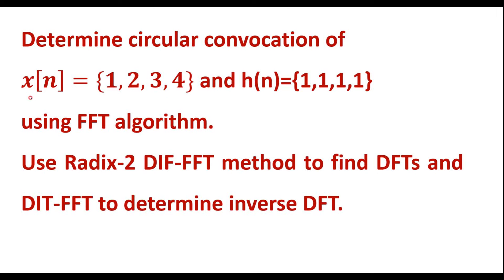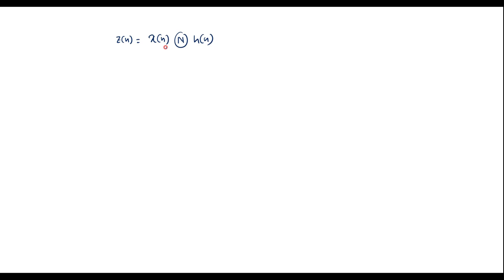In this problem, two sequences are given: x(n) and h(n). We need to find the circular convolution between those two sequences using FFT algorithms. To find FFT of these two, we should use DIF FFT algorithm, and to find inverse DFT, we should use inverse DIT FFT algorithm. We have to use Stokeham's method. Let z(n) = x(n) circular convolution with h(n).